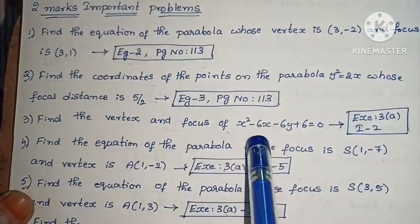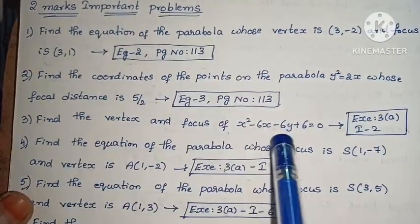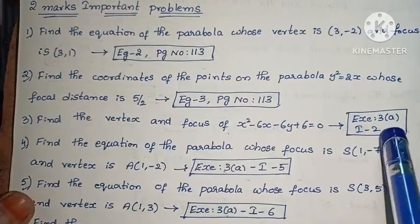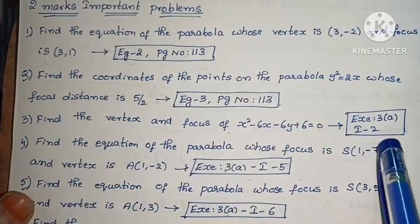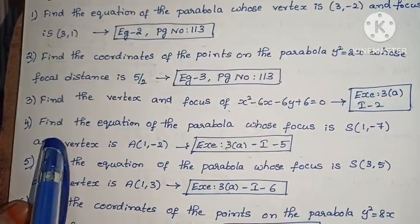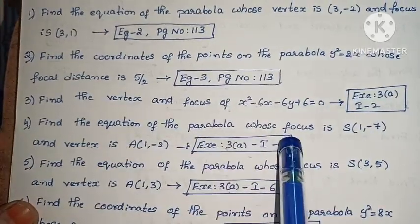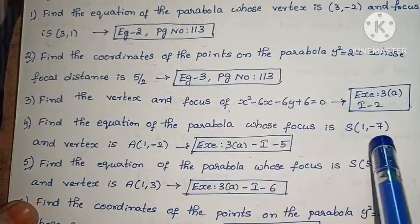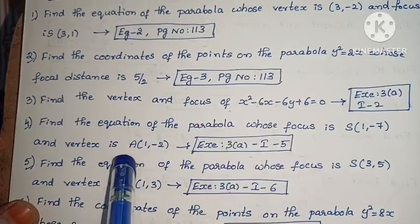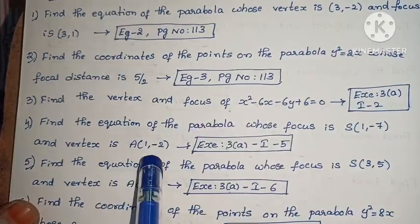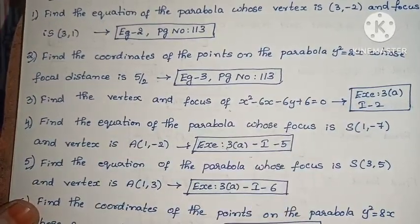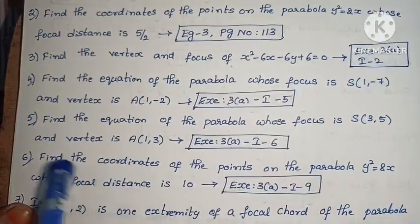Next, find the vertex and focus of x² - 6x - 6y + 6 = 0. Exercise 3, first part, second problem. Next, find the equation of the Parabola whose focus is (1, -7) and vertex is (1, -2). Exercise 3, first part, fifth problem.